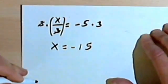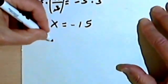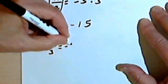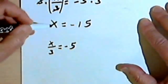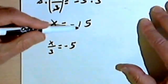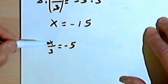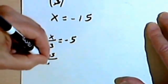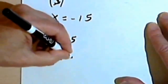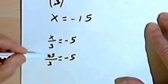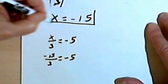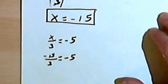And I can check this. So my original equation was x over 3 equals negative 5. If I think my answer is x equals negative 15, I want to put that negative 15 where the x is. So negative 15 divided by 3 equals negative 5. And negative 15 divided by 3 does equal negative 5. So this answer works.